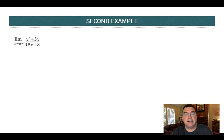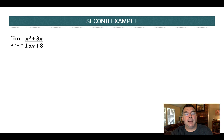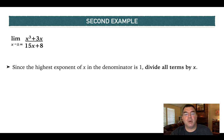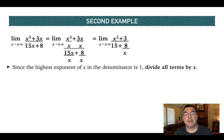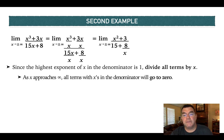In the second example, the numerator has a higher exponent than the denominator — the opposite of example one. The highest exponent in the denominator is x to the 1, so I divide everything by x: x cubed over x becomes x squared; 3x over x becomes 3; 15x over x becomes 15; and 8 over x stays as 8 over x. As x approaches infinity, that numerator still approaches infinity.